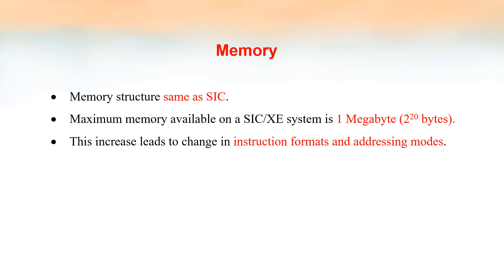Memory structure is same as SIC, but there is one difference — the maximum memory available in SIC XE is 1 megabyte, which is 2 to the power 20 bytes. Earlier in SIC, it is 2 to the power 15 bytes. This increase leads to a change in instruction formats and also the addressing modes.